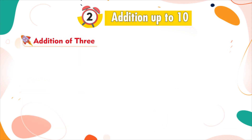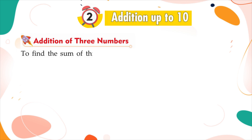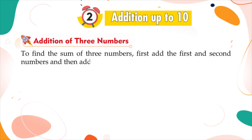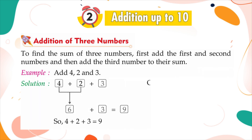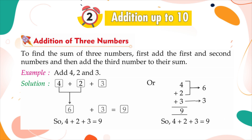Addition of three numbers: To find the sum of three numbers, first add the first and second numbers, and then add the third number to their sum. Example — add 4, 2 and 3. Solution: 4 plus 2 plus 3 is equal to 9.